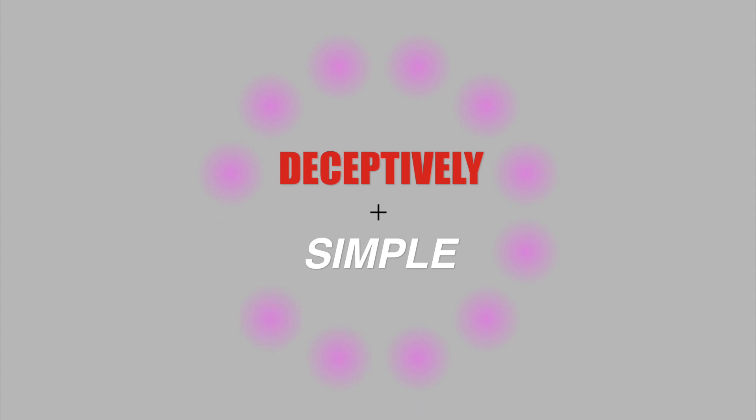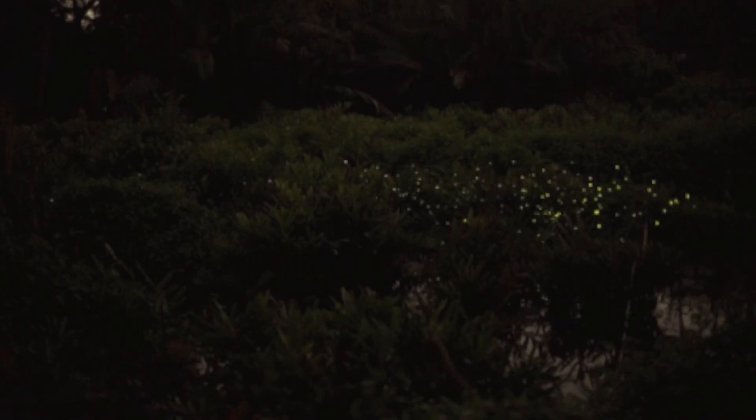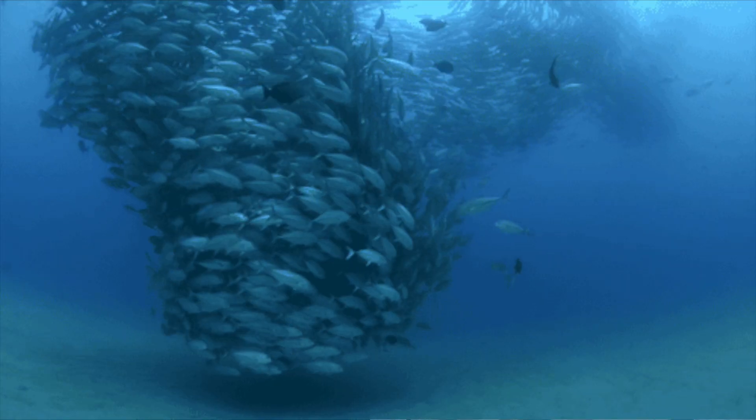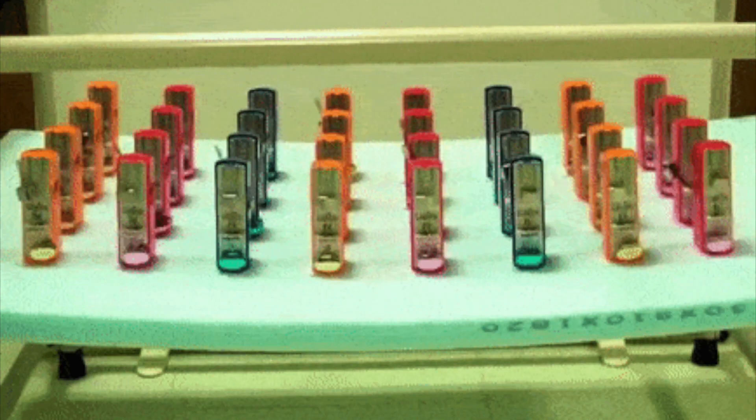Here's a deceptively simple question for you: what's common between a group of male fireflies flashing on a tree, a flock of birds, a school of fish, and this bunch of metronomes?